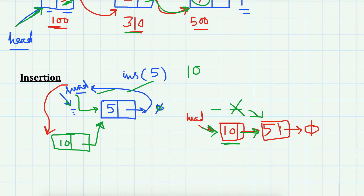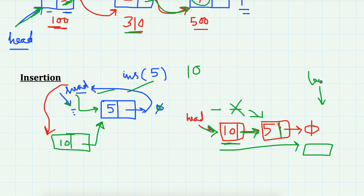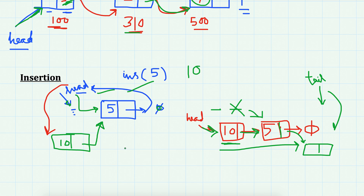We could also insert at the end. In that case, either you start from head and iterate till the end and then put the node there, or keep another pointer — like head — to reference the last node and name it tail. In that case, make the tail point to the new node and the next of the previous node point to this new node.